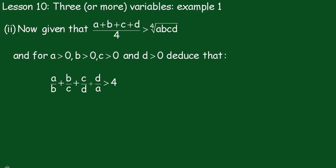In part 2, now given that (a+b+c+d)/4 is greater than or equal to the fourth root of abcd, show that a/b + b/c + c/d + d/a is greater than or equal to 4. You can pause the video and have a go at this yourself, the same as the other one really.